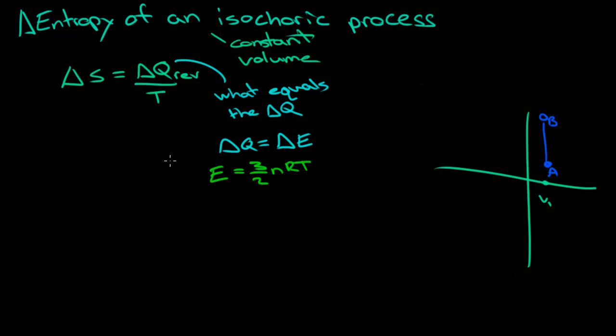And so, if you wanted to find the derivative of this, we know that this is constant. So, it's a constant times the derivative of this. So, it becomes the derivative of E equals 3 over 2 nR times the derivative of T, or the infinitesimally small change in T.